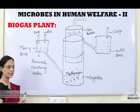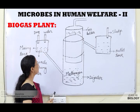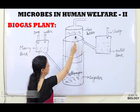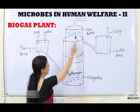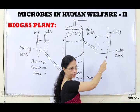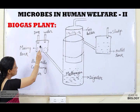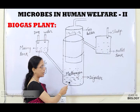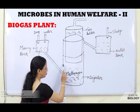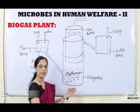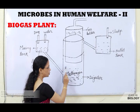Now let us see the biogas plant. The tank is made up of concrete. There is a mixing tank, and then a digester which is completely sealed. A gas holder is placed just above the digester, and there is an outlet tank. In the mixing tank, bio-waste, cow dung, and water are mixed, and this mixture is allowed to pass through a pipe into the digester where methanogens are present.